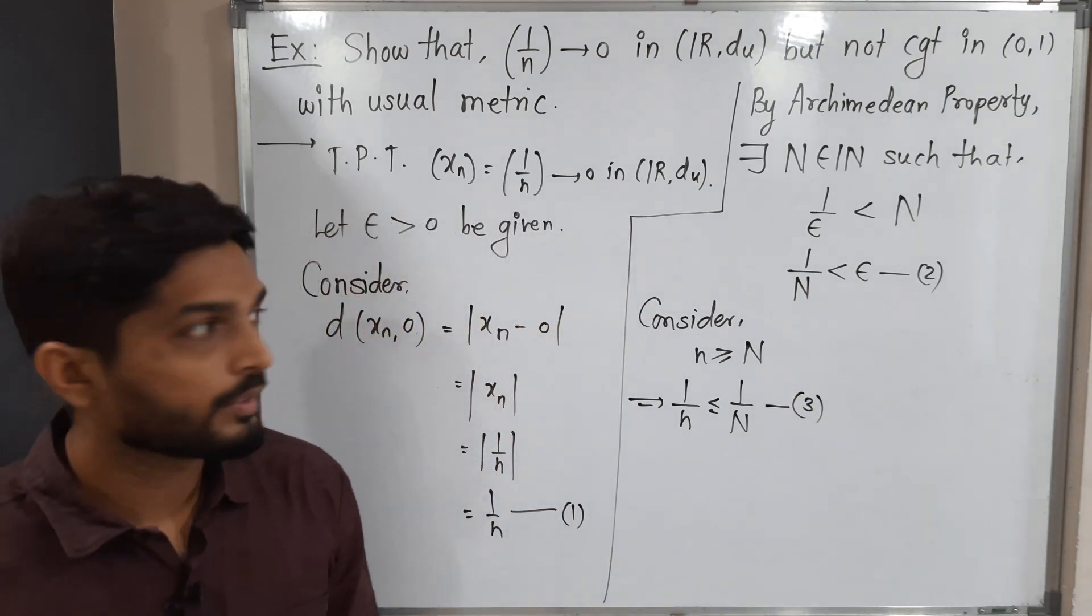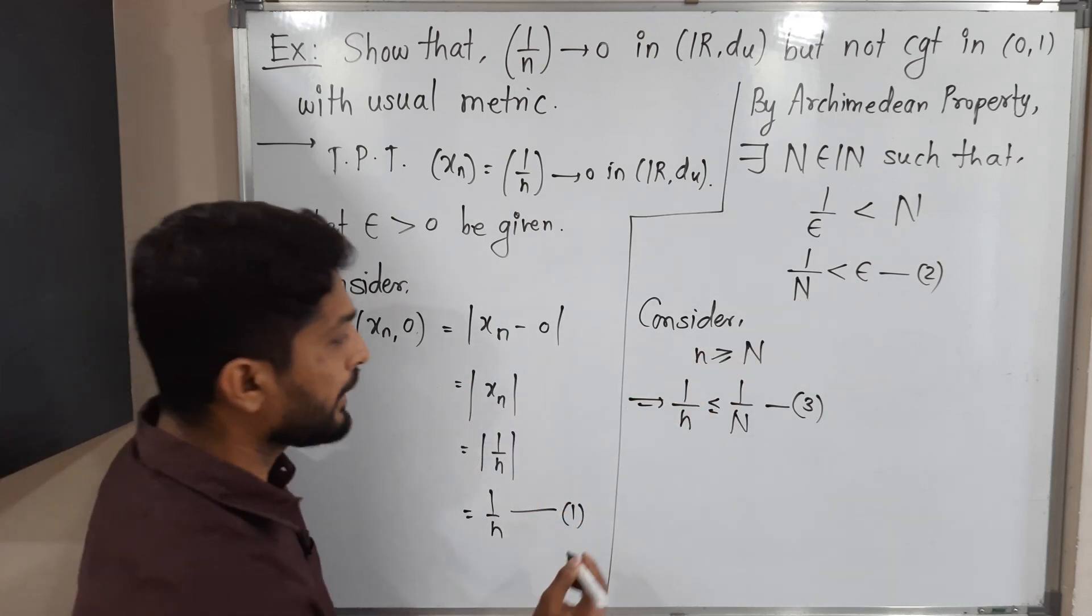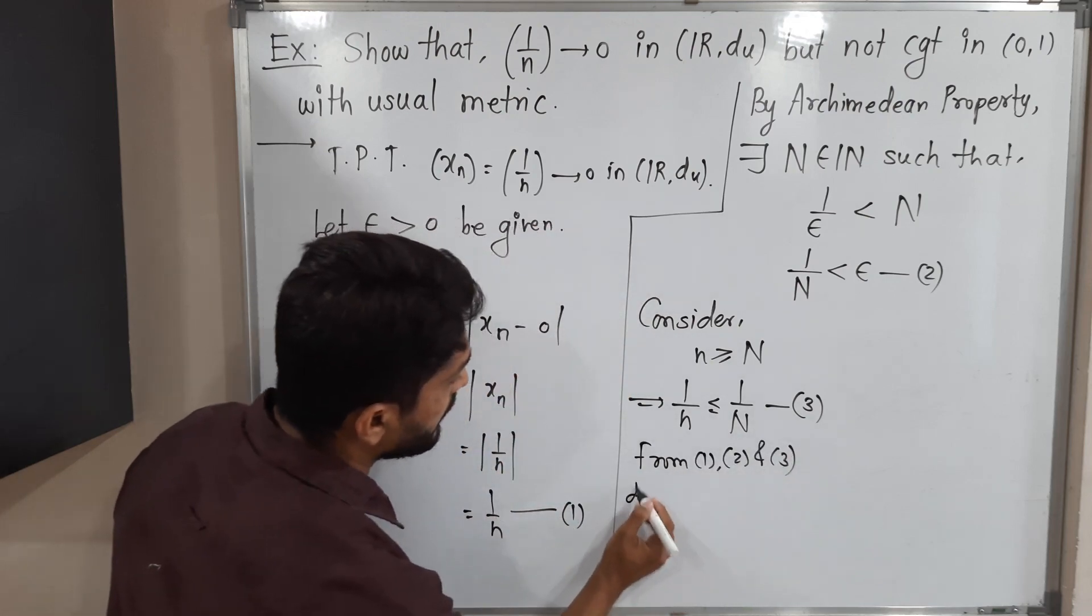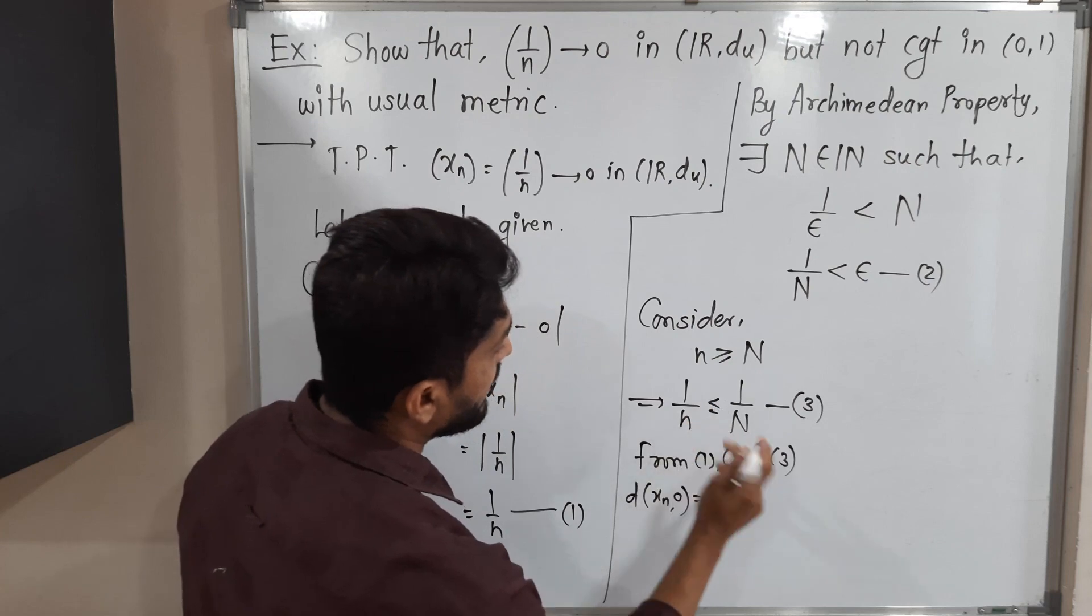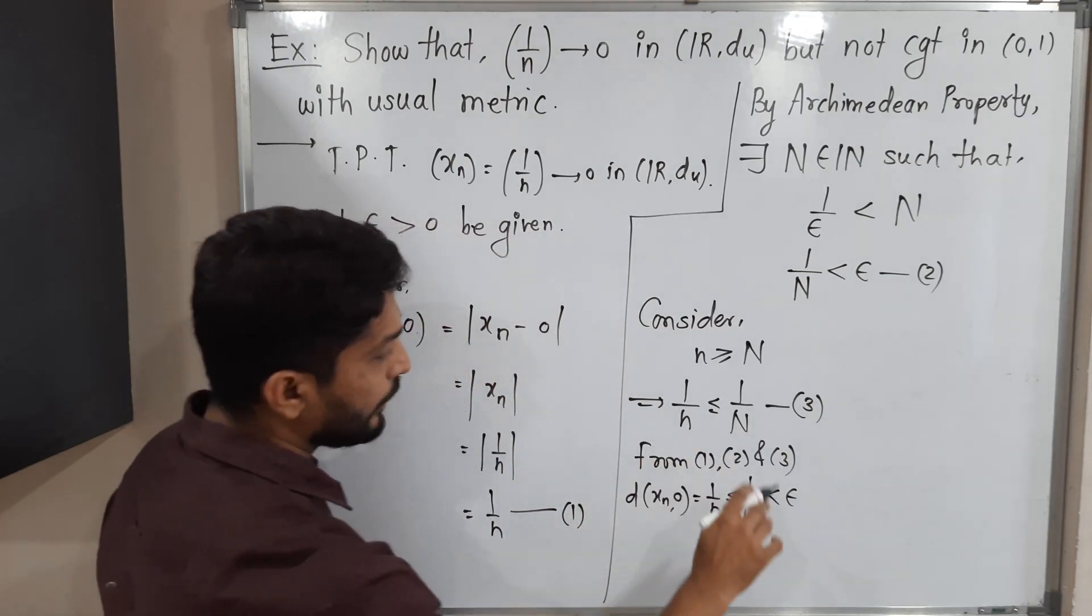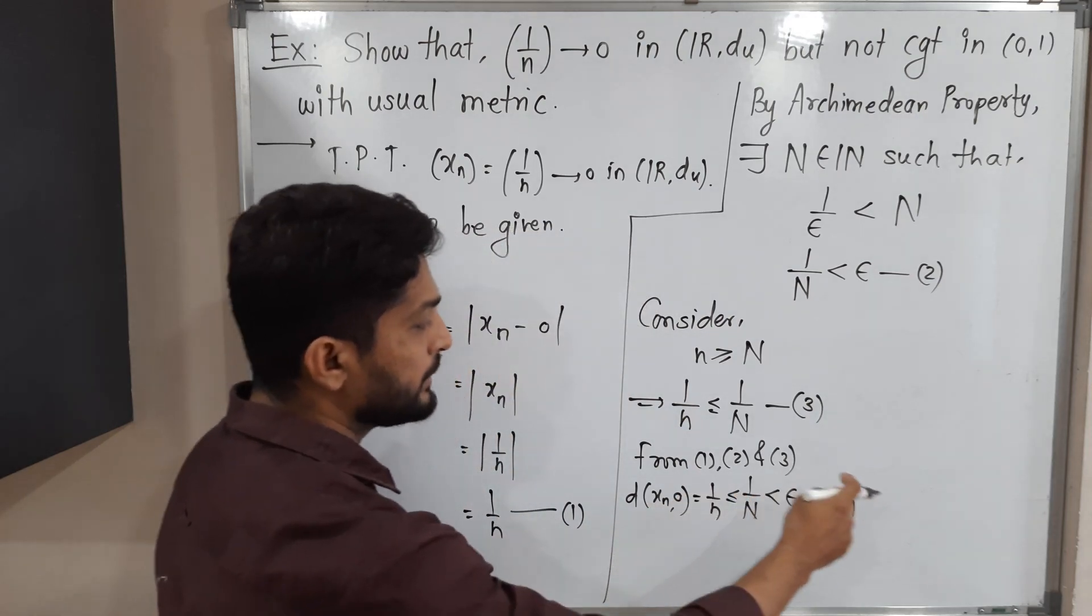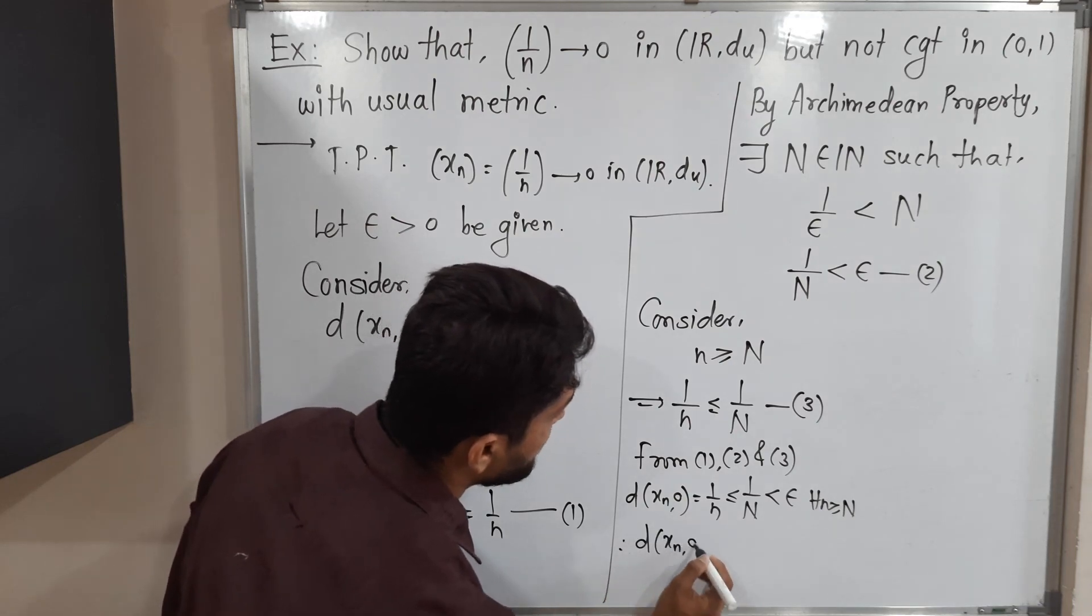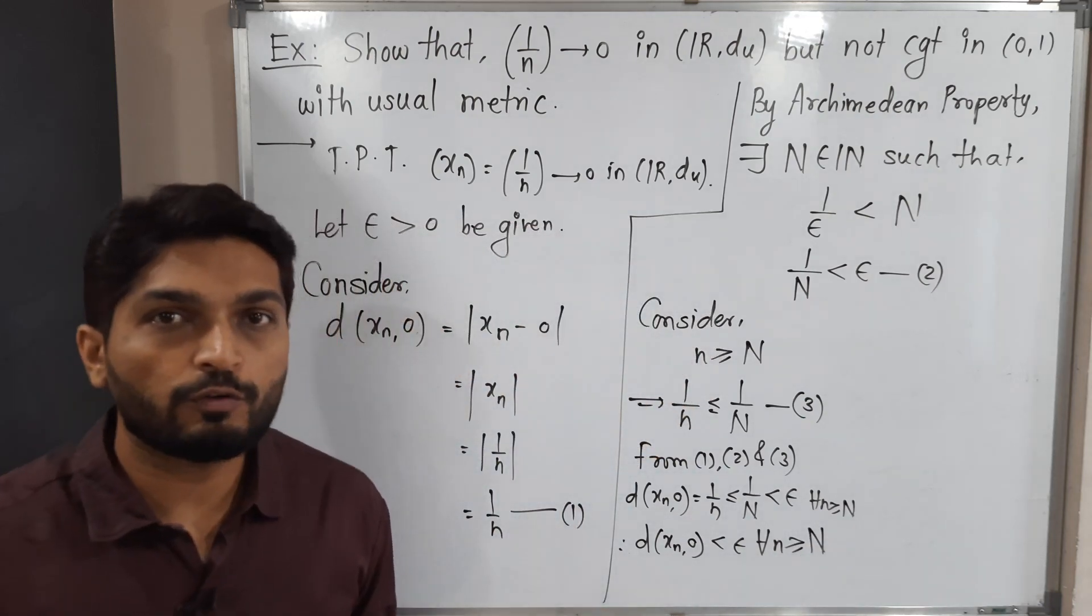So can you guess my next step? See, now we have 2 inequalities and this equation. So let us combine from 1, 2 and 3. See, D of x_n, 0, we got its value 1 by n. But 1 by n less than or equal to 1 by capital N. But 1 by capital N is less than epsilon. And all these are true for this n greater than or equal to capital N. A less than B, B less than C, then we say A less than C. So therefore D of x_n, 0 less than epsilon for all n greater than or equal to capital N. This is definition of convergent sequence we got.